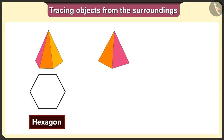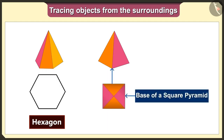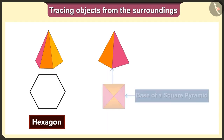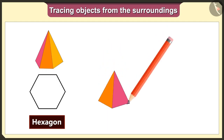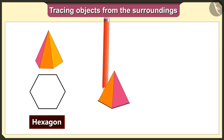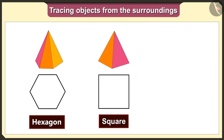Now we will trace the square pyramid. The base of the square pyramid is a square, so we will get a square shape when we trace this pyramid.